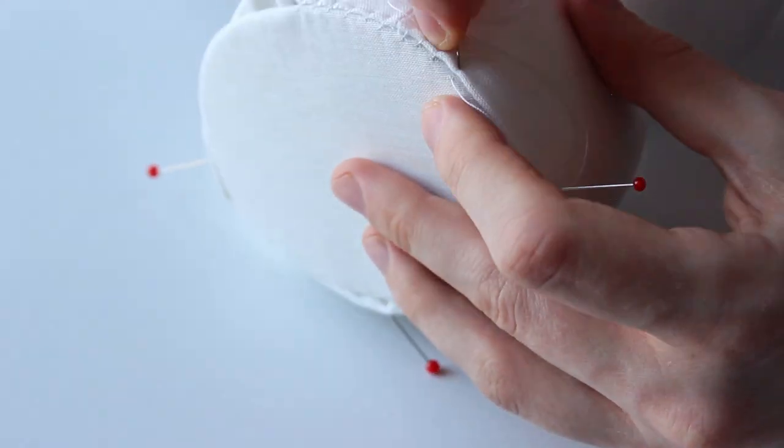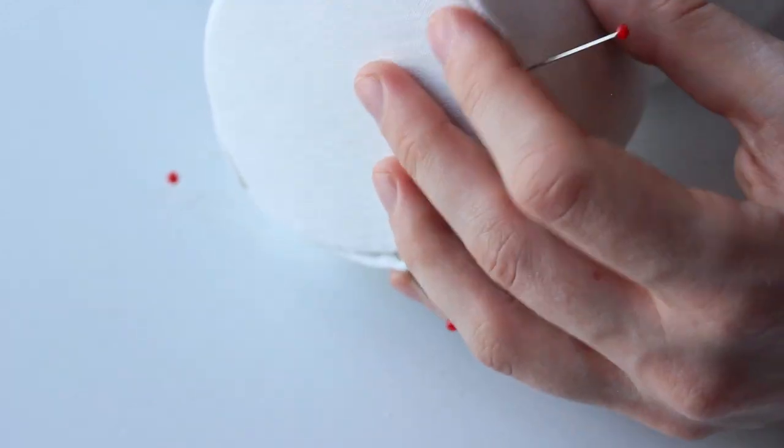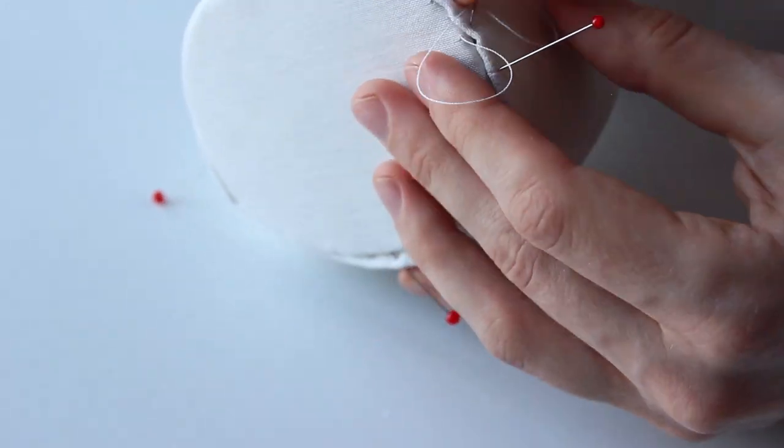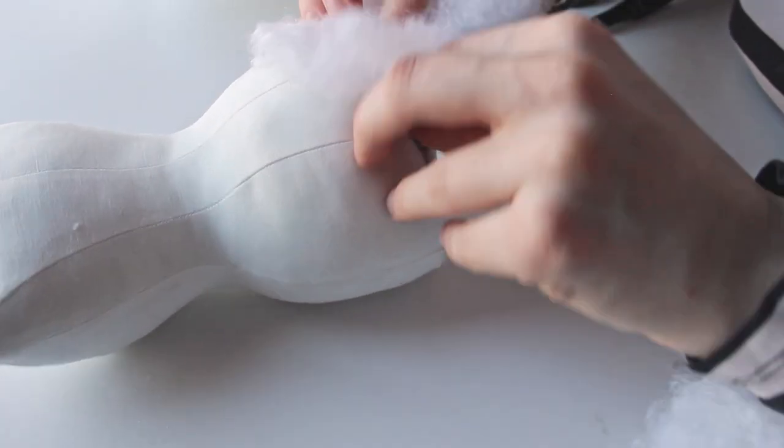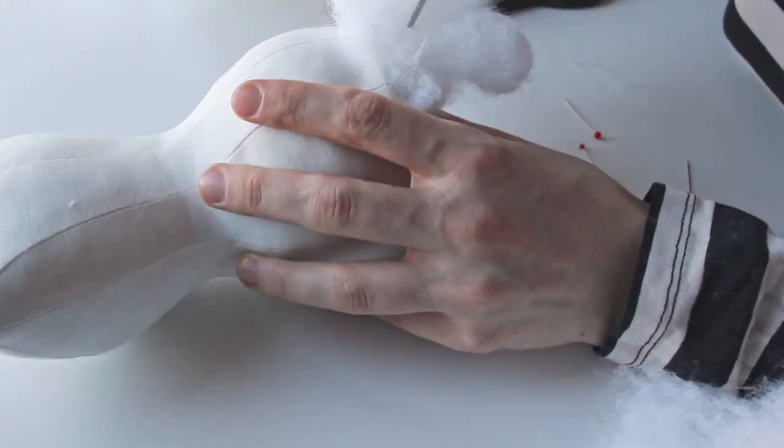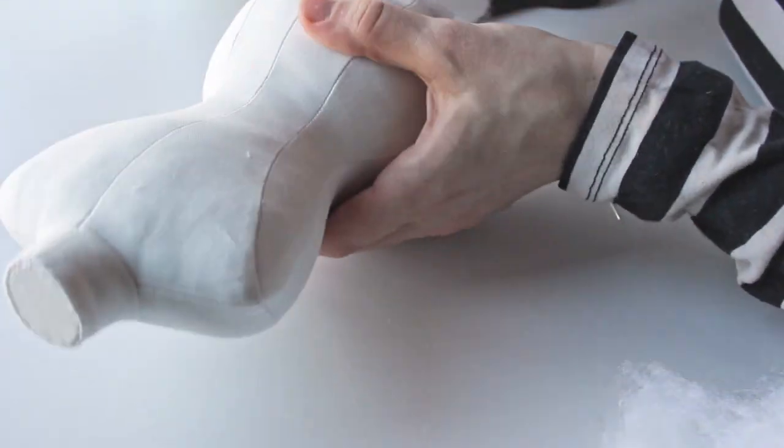Again, whip stitch or ladder stitch the base to the dress form. You can add more stuffing as you go, if you see some areas that kind of caved in.